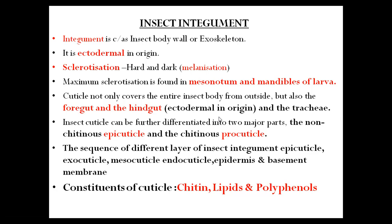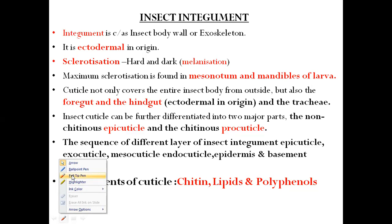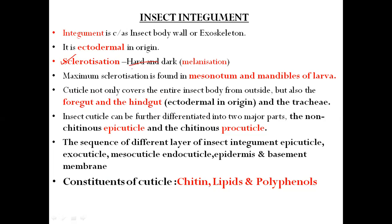About sclerotization: sclerotization means the structure is hard and dark. The hard structure refers to sclerotization, and the dark coloration refers to melaninization. These are two important terms. If the insect integument layer is hard, that is sclerotization; if it is dark in color, that is melaninization.